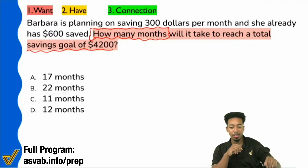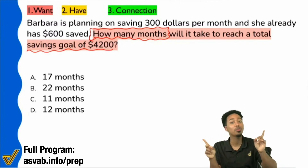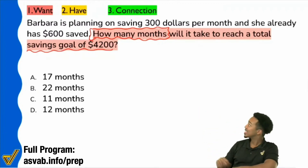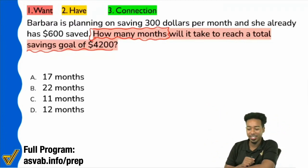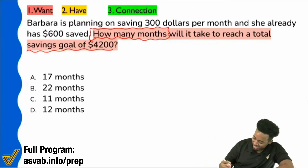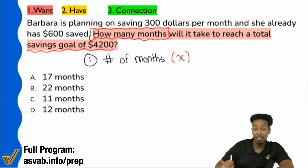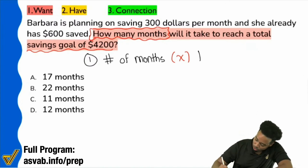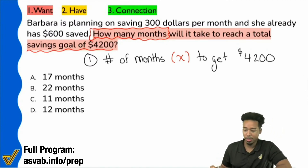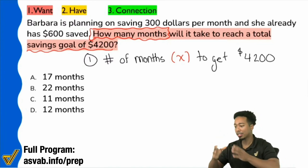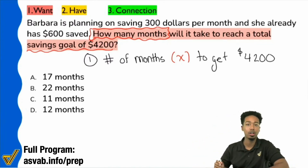How many of this to get to that many of that? Not particularly Y per X, but that's the relationship between Y and X. How many months X to get to the savings goal of Y — $4,200. So step number one: we're looking for the number of months, and that's going to be your X. $4,200 is represented by Y. That's the total, the result. M times X plus B — add it all together, that gives you the result, the $4,200.